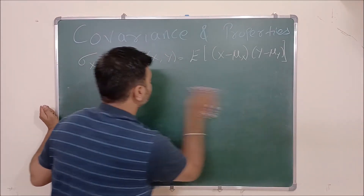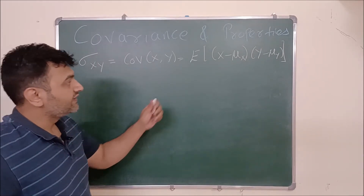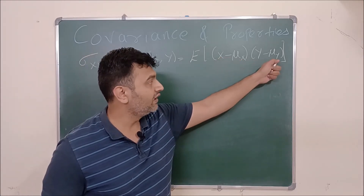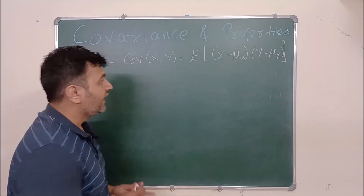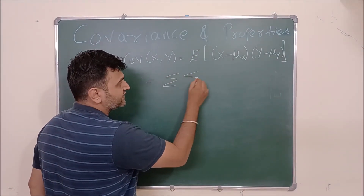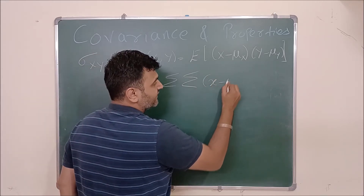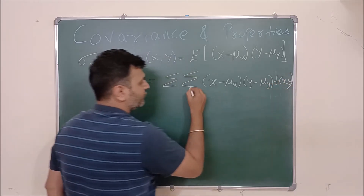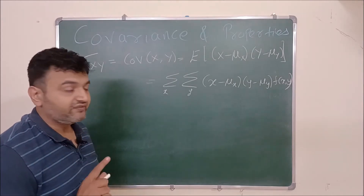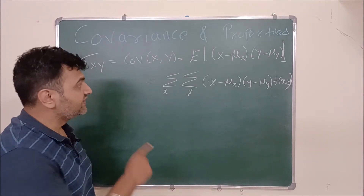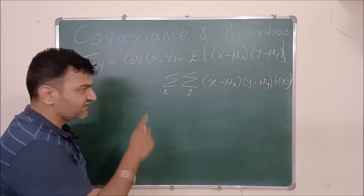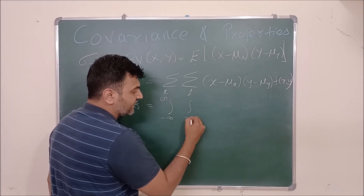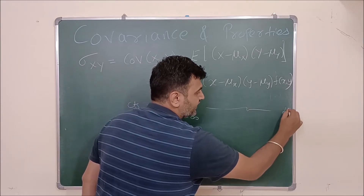Now let us go for the definition. The definition of covariance is: it is the expectation of (X minus mu_X) times (Y minus mu_Y), where mu_X is the mean of X and mu_Y is the mean of Y. By definition, this is a double summation of (X minus mu_X)(Y minus mu_Y) times f(x, y) — the joint probability distribution. For the continuous case, it becomes a double integral from negative infinity to infinity.